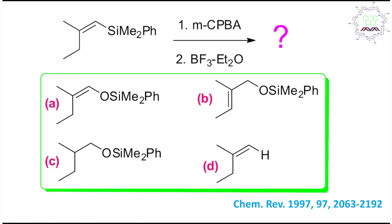Now if you look at this problem a little carefully, this is a very small molecule — one is this silane and another is this alkene. So two types of functional groups are possible, and the reagents are MCPBA and BF3 etherate.